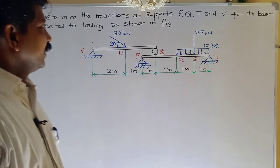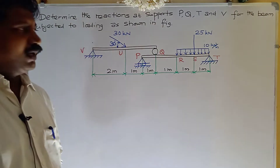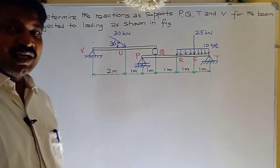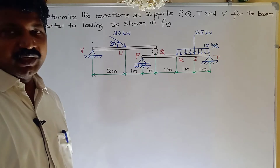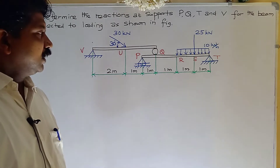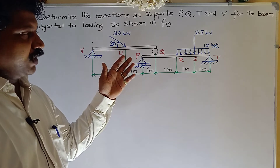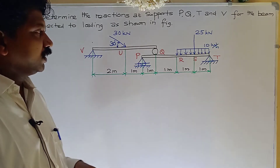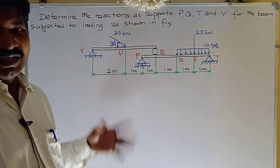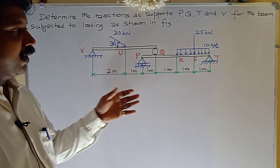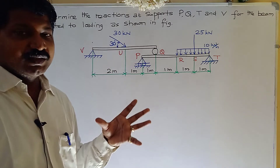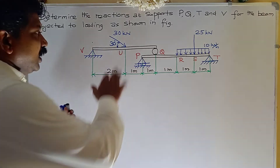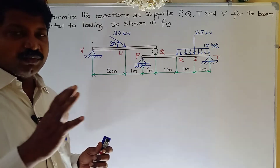Dear students, welcome. Today we are going to discuss about supports and reactions — one more problem. In previous classes we discussed simply supported beams having point loads, uniformly distributed loads, and uniformly varying loads. In this course, the difference is that two beams are available: one upper beam and one lower beam. We will solve using the same procedure as previous classes.